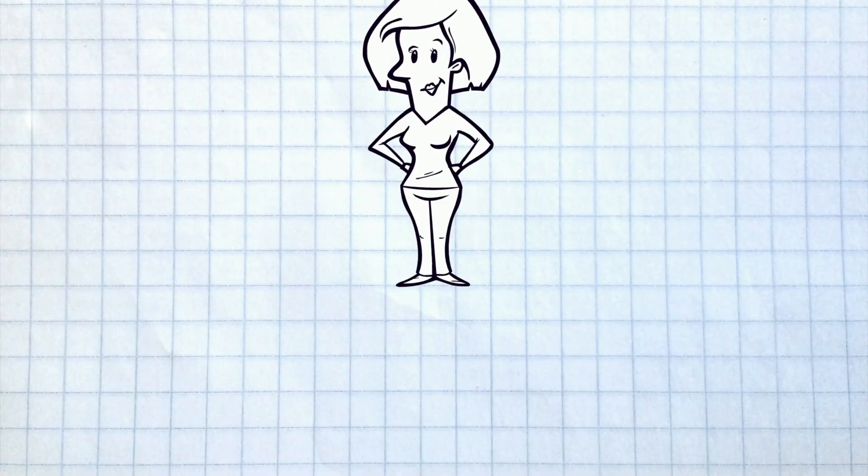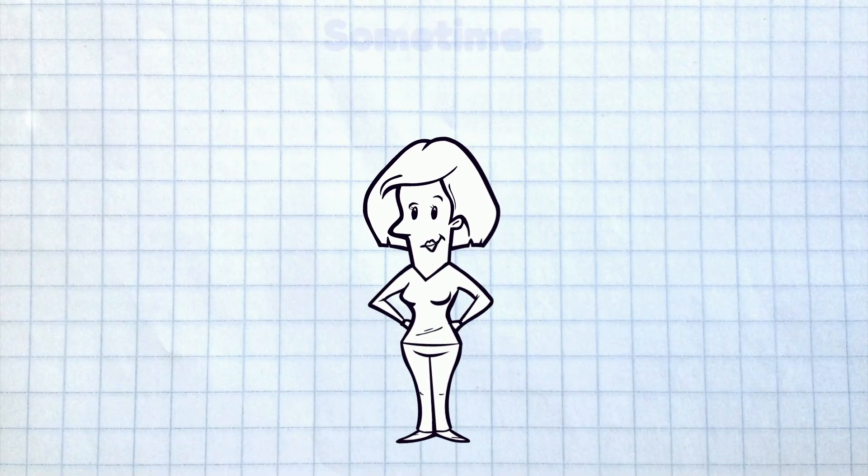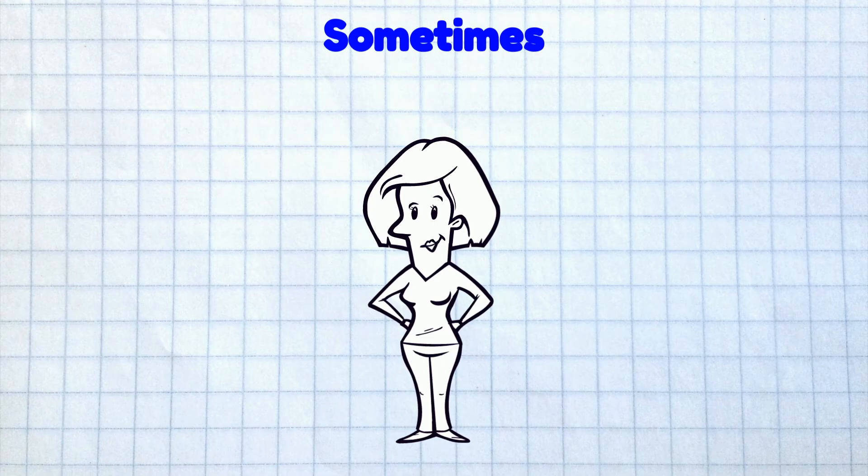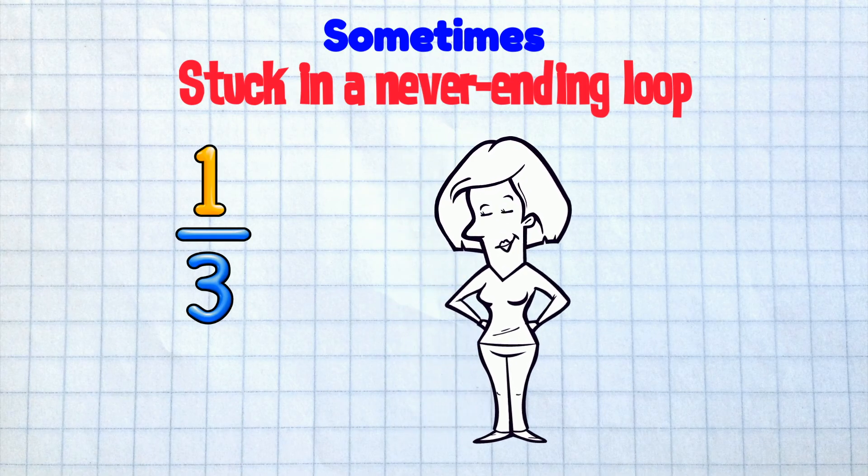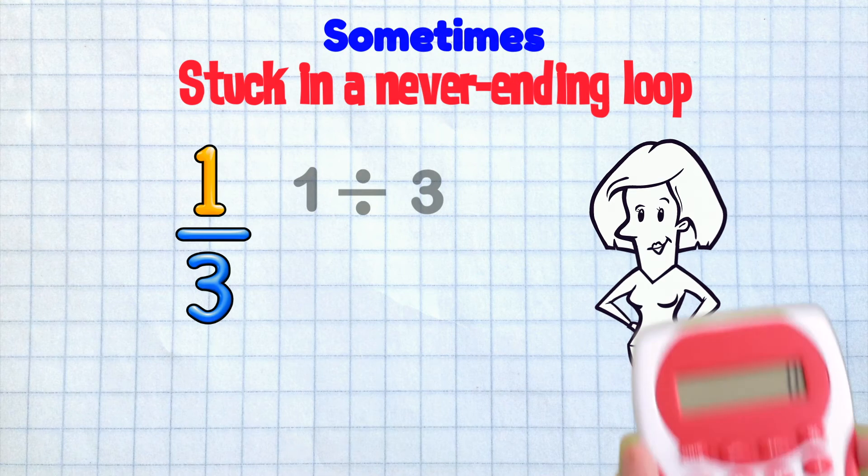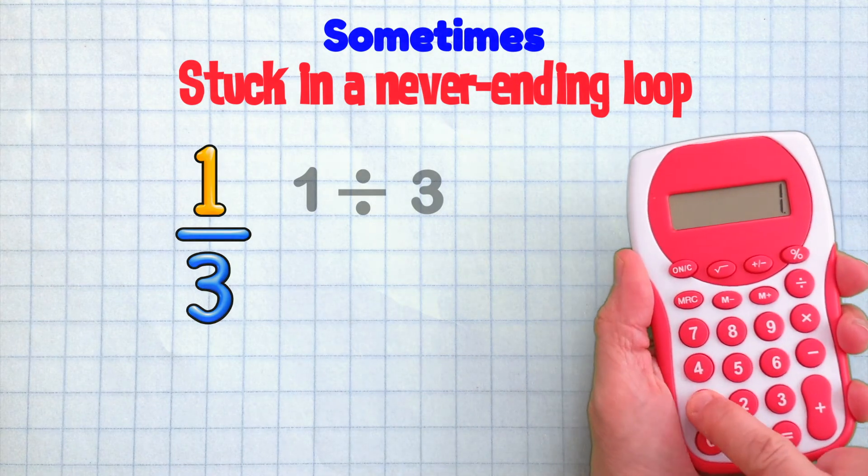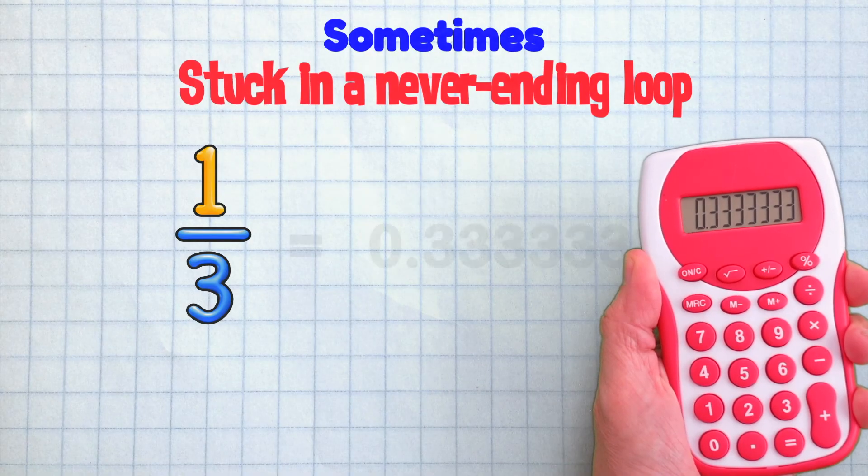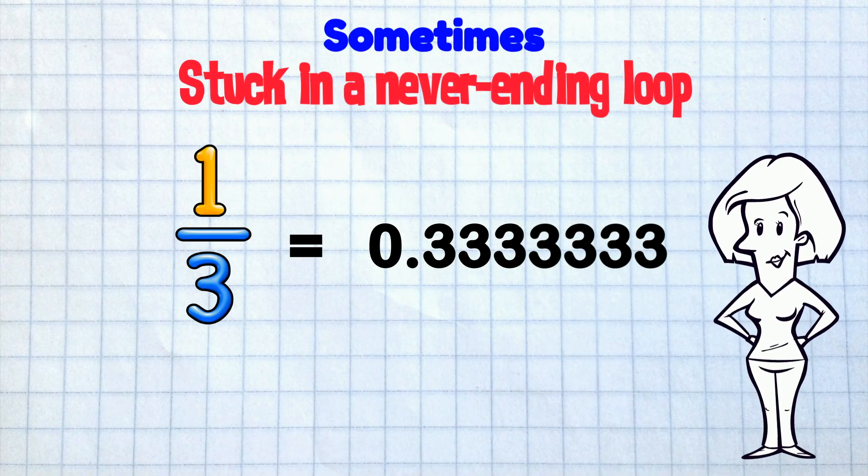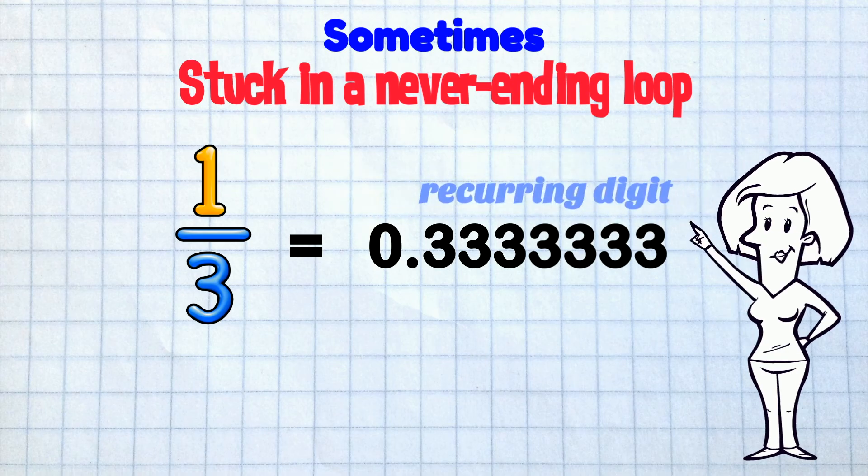And there's more to know! Sometimes as you're doing a division problem, you'll get stuck in a never-ending loop, like in this example of 1 third. 1 divided by 3 on the calculator gives us 0.333333333. The 3 keeps coming up - it's a recurring digit!